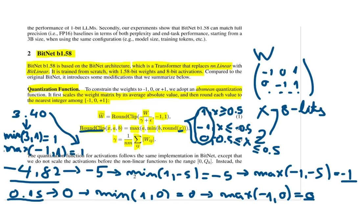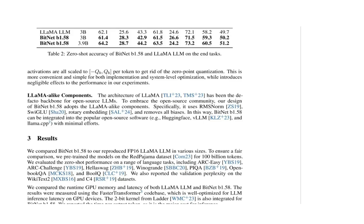The authors said that they tried to make the BitNet b1.58 architecture to be like LLaMA. To do that they use RMSNorm, SwiGLU, rotary embedding, and remove all biases. By doing this, BitNet b1.58 can be integrated into popular open source software, for instance Hugging Face, vLLMs, and llama.cpp with minimal efforts.